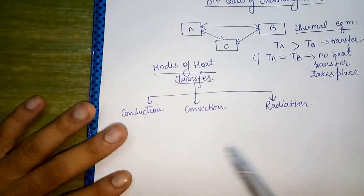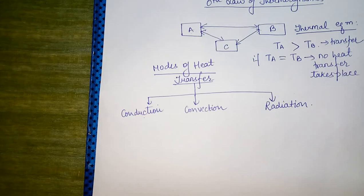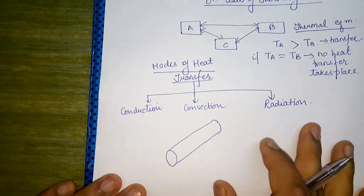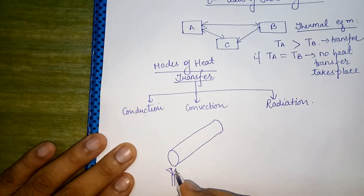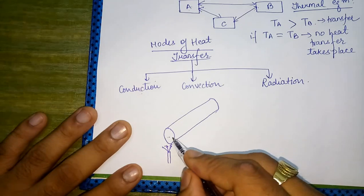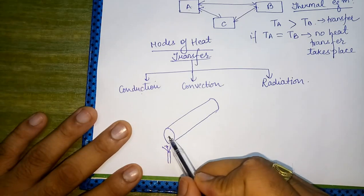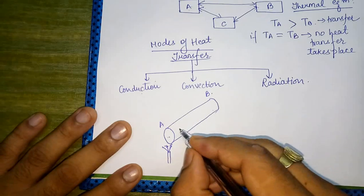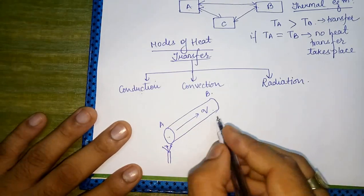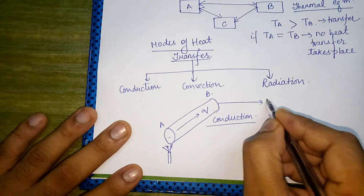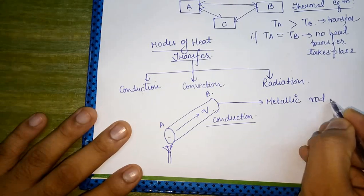If we talk about conduction — say we have taken a metallic rod, and we are heating one end of the rod. After some time, we will observe that the heat has been transferred from end A to end B, and it will be difficult for you to hold the other end. The reason is that heat is being transferred by a mode called conduction.